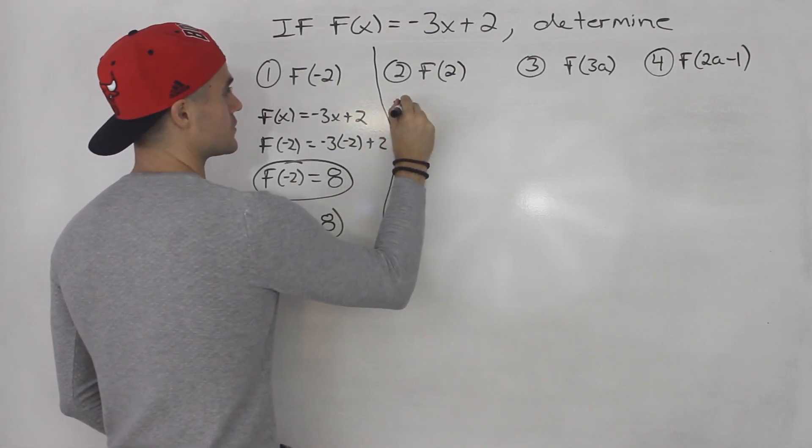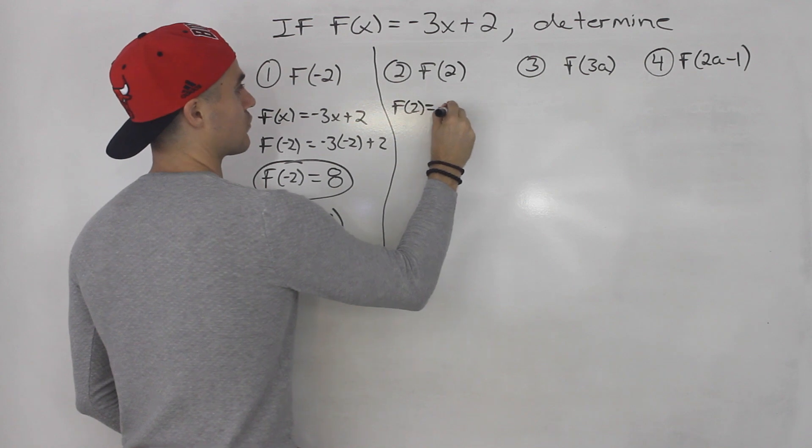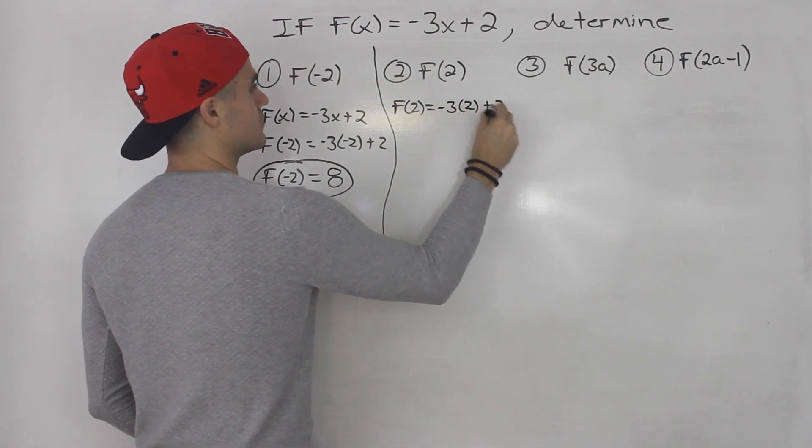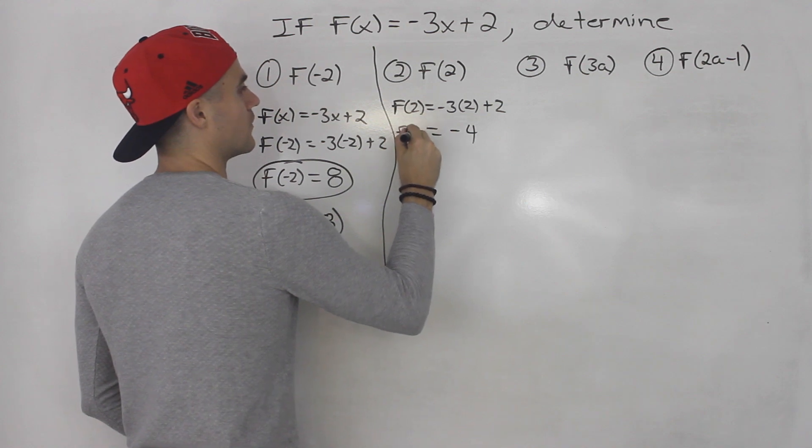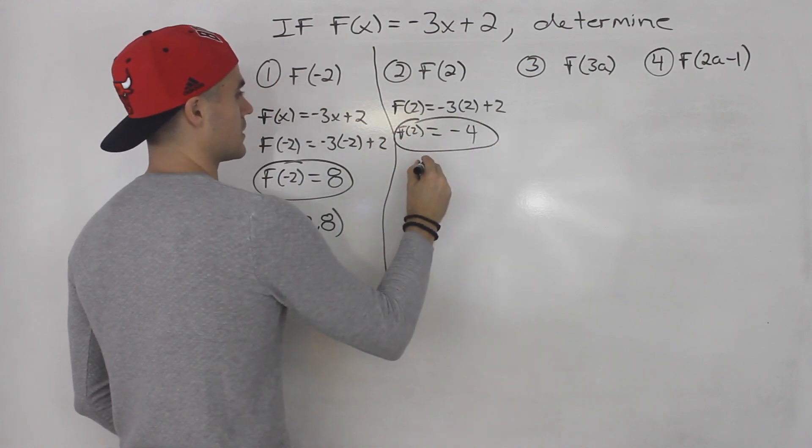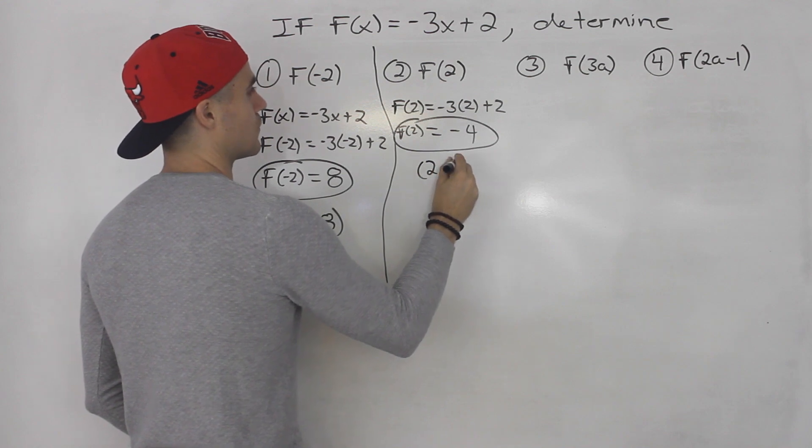Same thing here. f of 2 would be negative 3 times 2 plus 2, which would be negative 6 plus 2, which is negative 4. So that is the answer. The coordinate is 2 and negative 4.